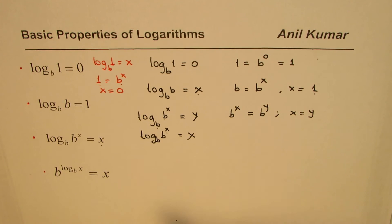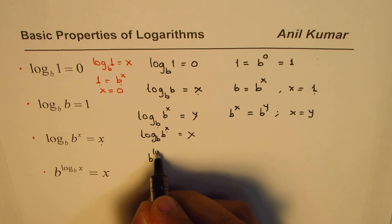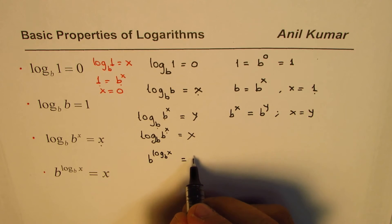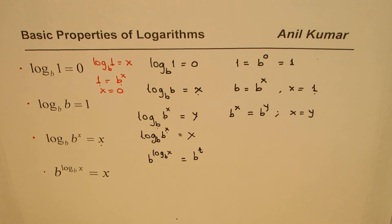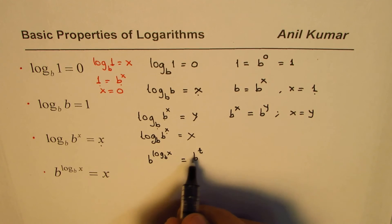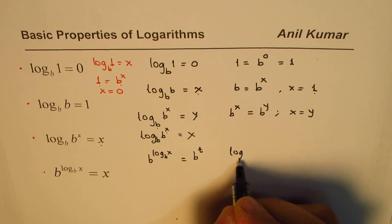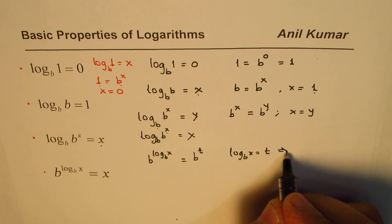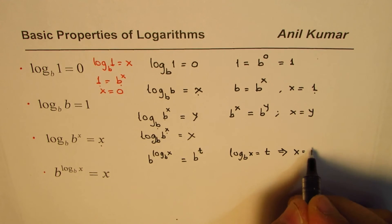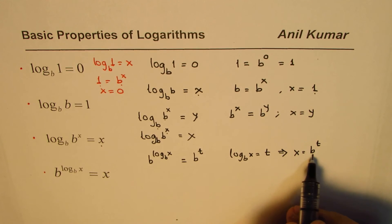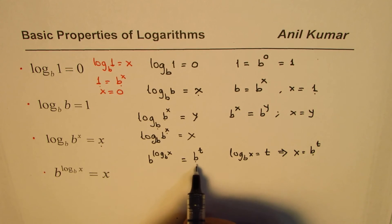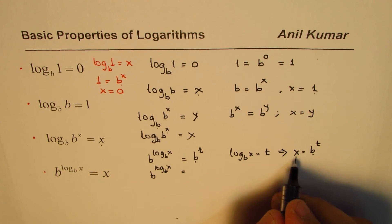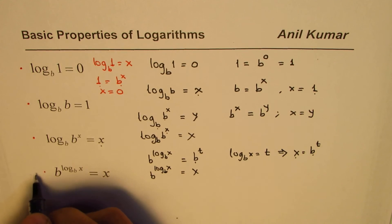The next property is b to the power of log to the base b of x. Let us write this as b to the power of t. Then the exponents must be equal, so log_b(x) equals t, and rearranging gives x equals b to the power of t. Replacing t with log_b(x), we get b^(log_b x) equals x, which is the property itself.